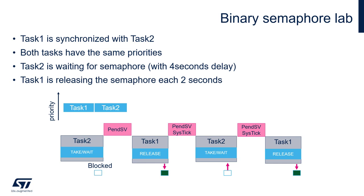We will prepare an example where Task 2 is waiting for a semaphore, being in blocked state for maximum 4 seconds, and Task 1 is releasing the semaphore within its time slot each 2 seconds. In the next part of this example, we will add an external interrupt which could release the semaphore in asynchronous mode on each button press.